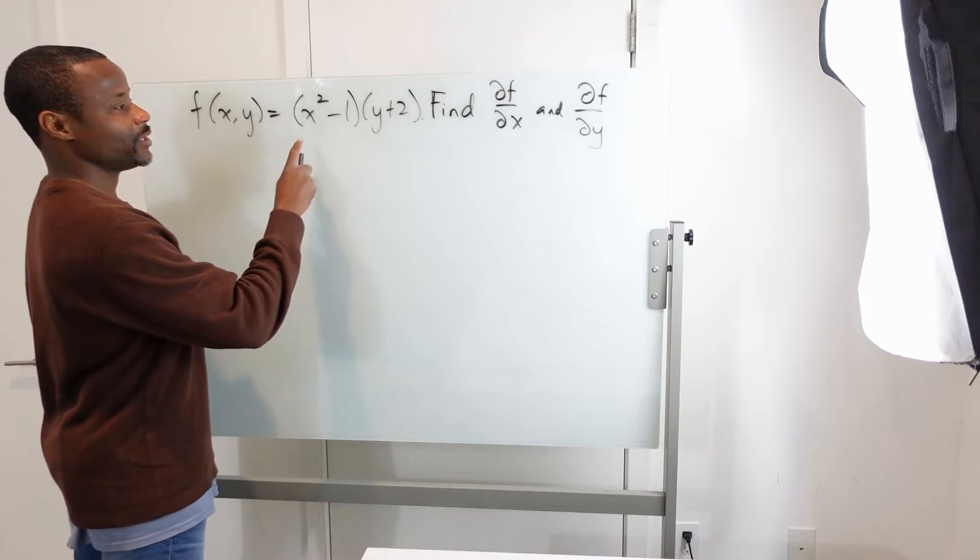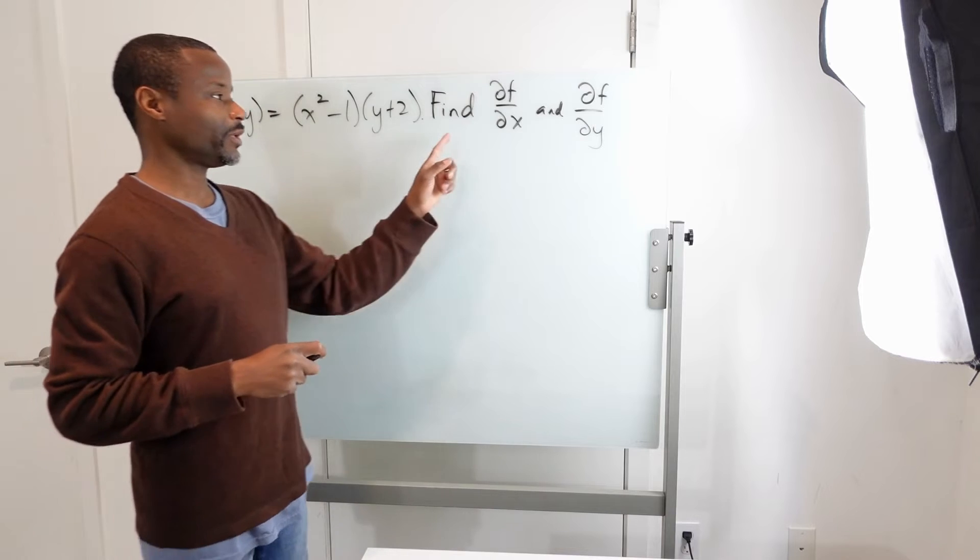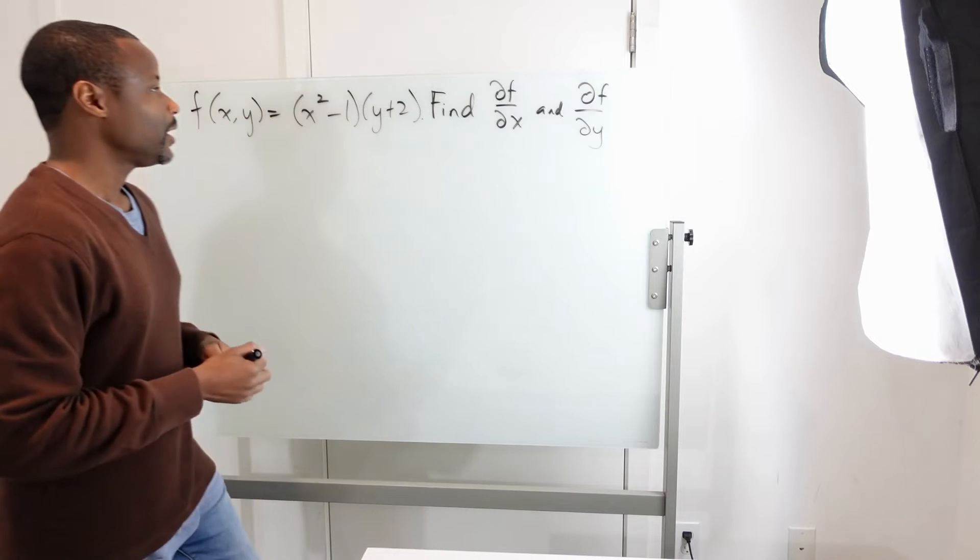For this problem, we're given f of x, y equals the quantity x squared minus 1 times the quantity y plus 2. We're asked to find the partial derivative of f with respect to x and y. How does that work?